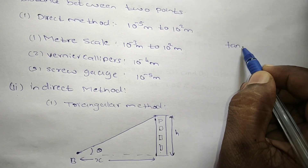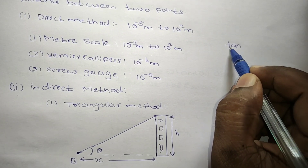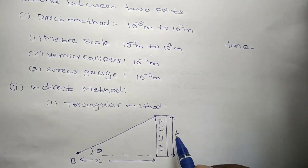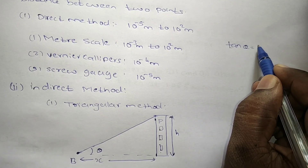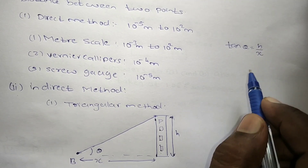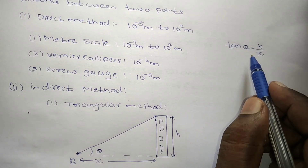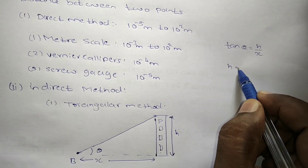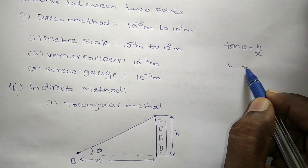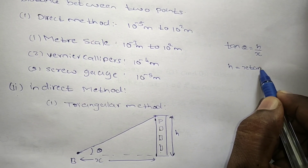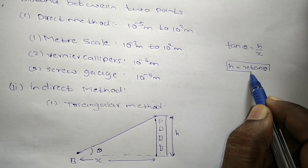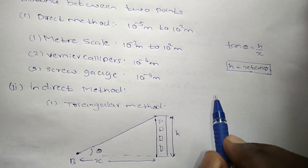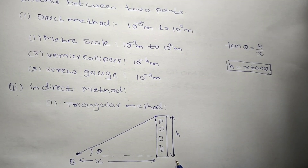For this right angle triangle, tan theta equals opposite side divided by adjacent side, which is h divided by x. So the height h equals x multiplied by tan theta. That is the triangulation method.